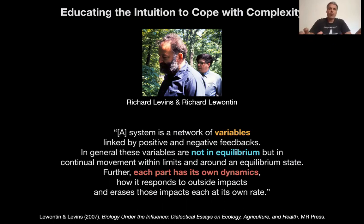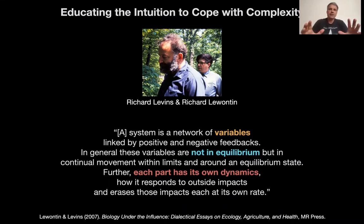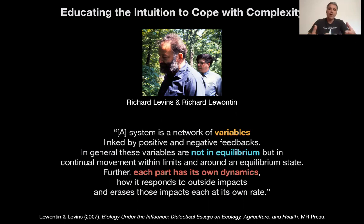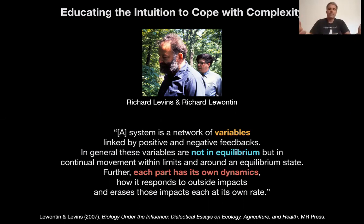They give a very interesting definition of what a system is: a system is a network of variables. This is interesting — variables imply that the entities involved in a system can change over time. But variables are also something we use in mathematics — a formal concept to describe something real. So we'll have to think about the correlation between a formal system and an actual system out there in the world. These variables are linked by positive and negative feedbacks.